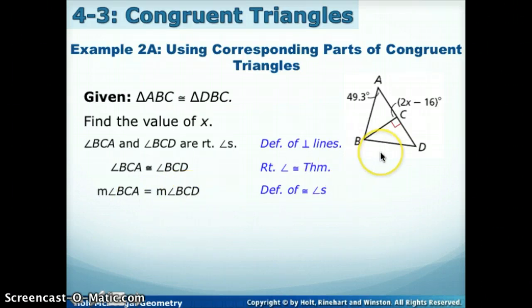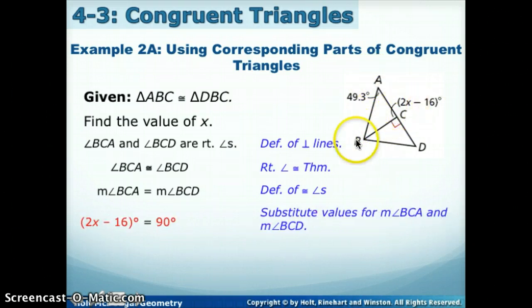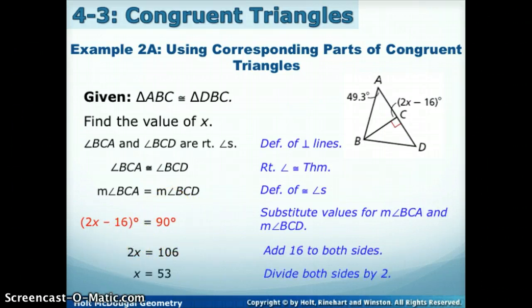Now we're going to go in the picture and plug in such measures. BCA says it's 2X minus 16, and BCD has a right angle symbol, so that means it's 90. Now if we were finding X, we're going to solve. All my X's are on one side, so that's good. I see minus 16, so I'm going to add 16 to both sides. And then now I have 2X, so to get rid of the 2, I'm going to divide both sides by 2, and I get that X is 53.